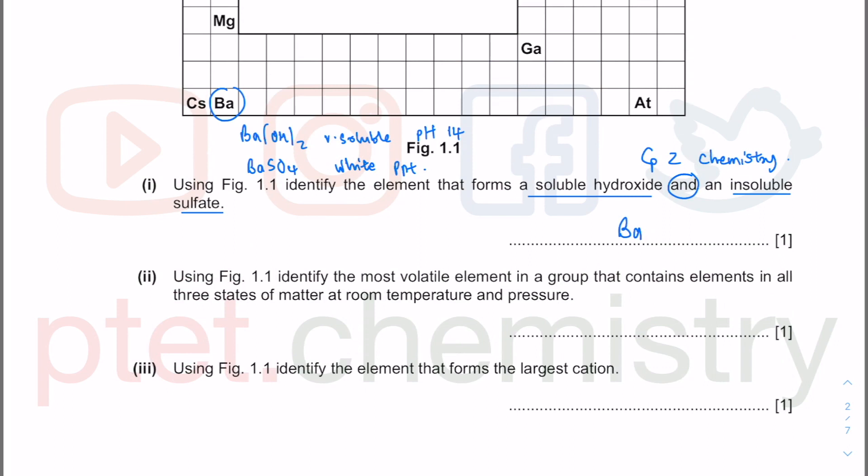With the same predictable section above, identify the most volatile element. So volatile means someone who gets angry easily if you talk about a volatile person. A volatile element basically means it boils easily. If you boil easily, it means your boiling point is very low. So the most volatile means it must be the lowest boiling point. In a group that contains elements in all three states of matter,